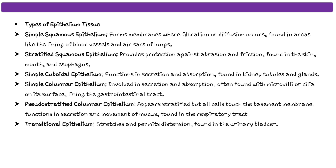The next type is simple cuboidal epithelium, which functions in secretion and absorption and is found in kidney tubules and glands. Then there is simple columnar epithelium, which is involved in secretion and absorption and is often found with microvilli or cilia on the surface. Cilia are small leg or filament-like structures. This type lines the gastrointestinal tract.